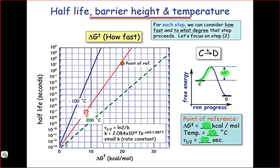As you can see from the graph here at left, as we increase the temperature, the delta G double dagger goes down. This leads to a decrease in the half-life, and a quickening of the reaction, as you might expect.